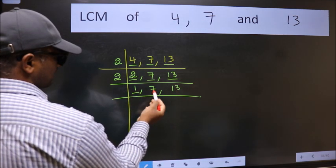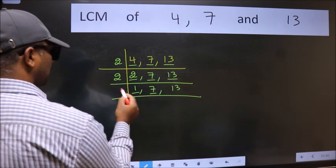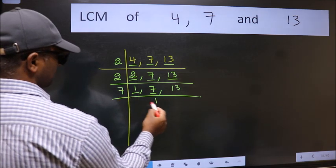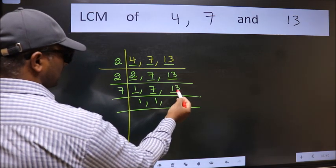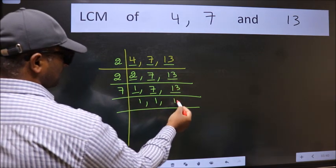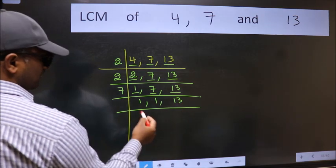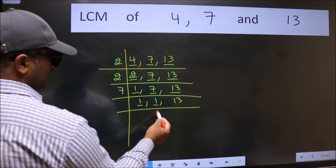So focus on the next number, 7. 7 is a prime number, so 7 divided by 7 is 1. The other number 13 is not divisible by 7, so we write it down as it is. Now we got 1 here and here.